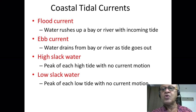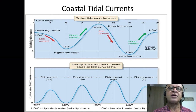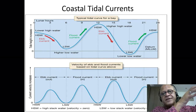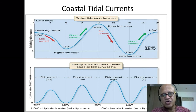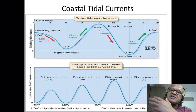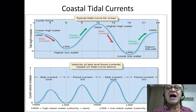Then you end up with things called high slack water and low slack water. This means the higher high water is reached — the water has sloshed up to its maximum height, stops for a moment, and then begins ebbing. You have zero current as you reach that point, then the ebb current goes down. Then you enter the flood phase, with flood currents coming in, reaching high slack water again, then another ebb current, and then you get the lower low slack water.